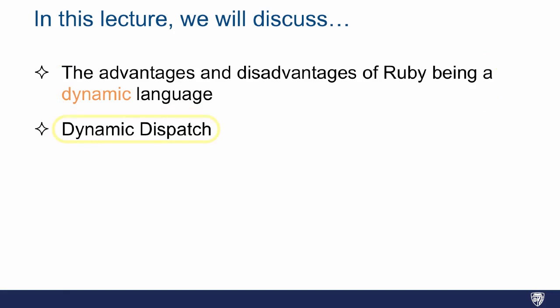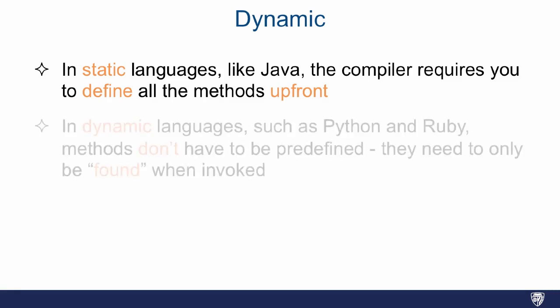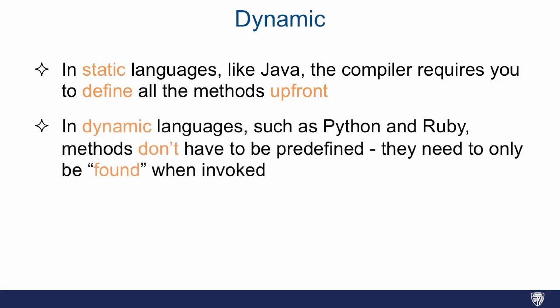So in static languages, for example Java, the compiler requires you to define all the methods up front. In dynamic languages, for example like Python or Ruby, methods don't have to be predefined; they only need to be found when invoked, and we'll see why that's a very cool feature.